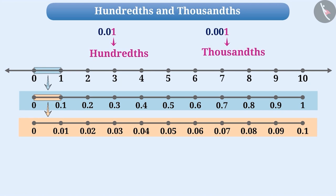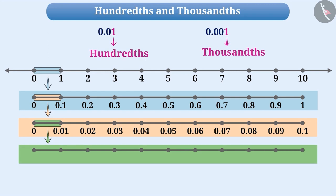we can divide the distance between 0 and 0.1 into 10 equal parts. Here, each part will be a thousandths part. That means,